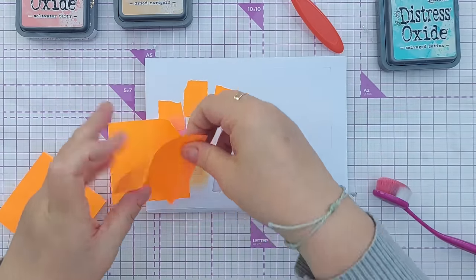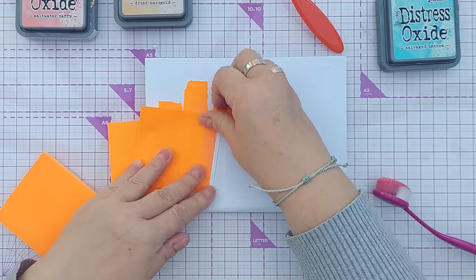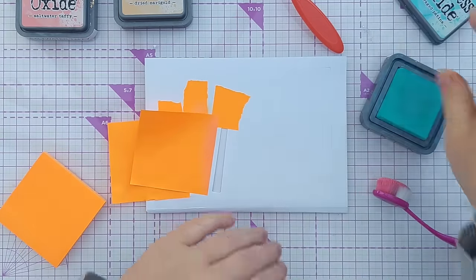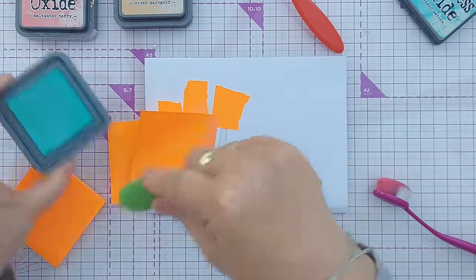Now I'm going to mask off the middle one so I've got one left, and I'm going to color that with salvaged patina.